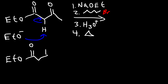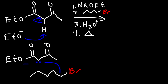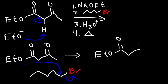The next step is alkylation. We're going to react that with 1-bromopentane. The carbon with a negative charge is going to attack the carbon attached to the bromine atom. So right now we're going to get this product. And then we're going to add 5 carbons: 1, 2, 3, 4, 5.